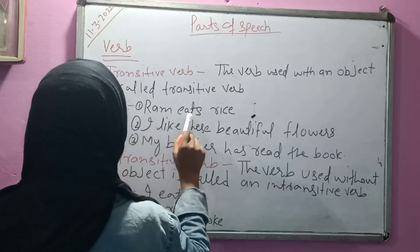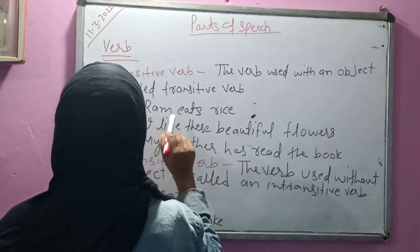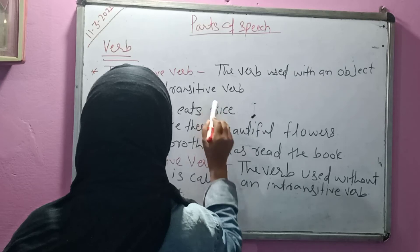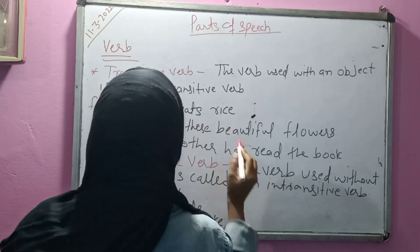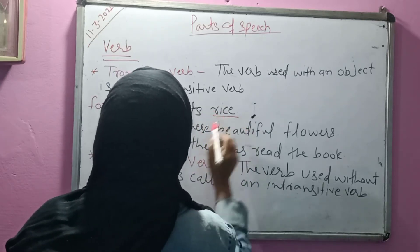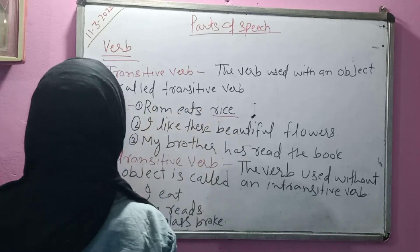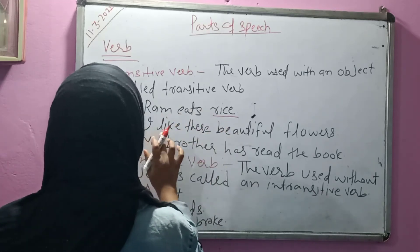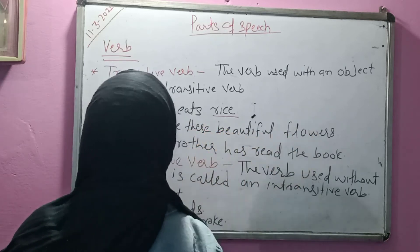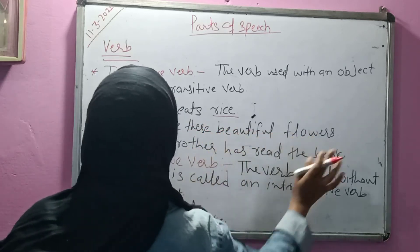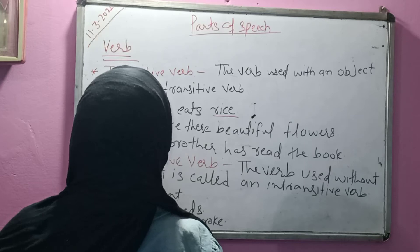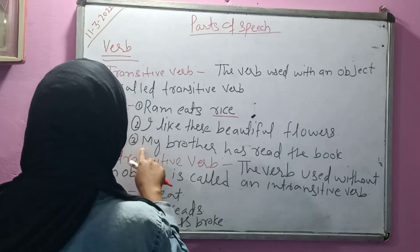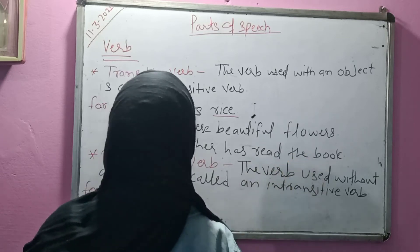For example: 'Ram eats rice' — here 'rice' is the object, so this is a transitive verb. Second example: 'I like the beautiful flowers' — 'flowers' is the object. Third example: 'My brother has read the book' — 'book' is the object.